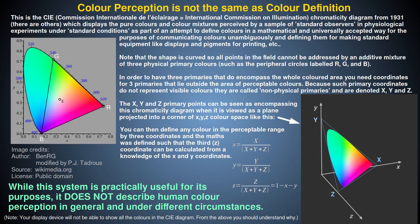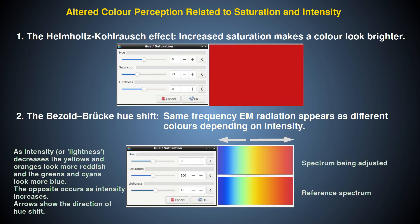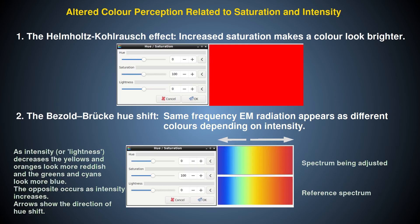However, just as with brightness, there's a lot more to perceiving colour than simply mixing three primaries into a definite colour. For example, saturated pure colours appear brighter than unsaturated colours when both are presented using EM radiation of the same overall intensity — this is known as the Helmholtz-Kohlrausch effect. The Bezold-Brücke hue shift is a kind of inverse of this, where the perceived hue of EM radiation of a single frequency range is perceived to change depending on changes in its intensity only.